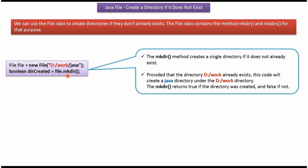The makeDirectory method creates a single directory if it does not exist. In this example, if the work folder is already present in the D drive, then the makeDirectory method will create a java directory under this work folder. If it is created successfully, then this method returns true. If it is not created successfully, then it will return false.